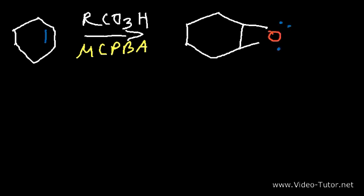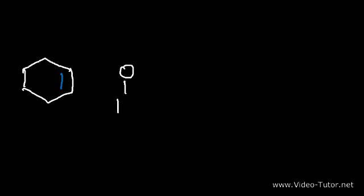How can we draw a mechanism for this reaction? How does the alkene actually convert into the epoxide? This reaction is basically a concerted reaction mechanism — everything happens all at once. Every bond-forming and bond-breaking process occurs simultaneously.